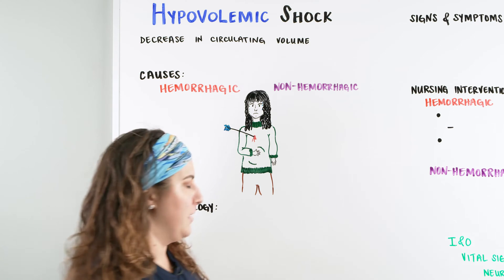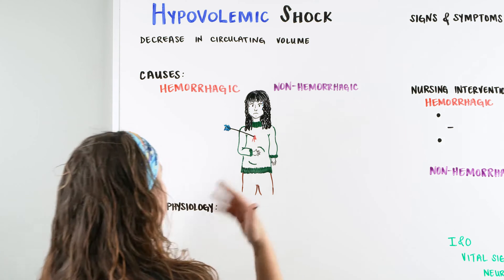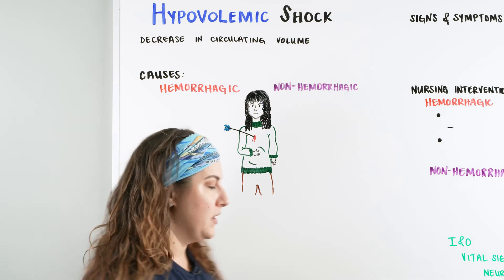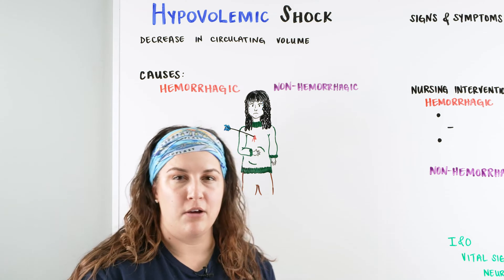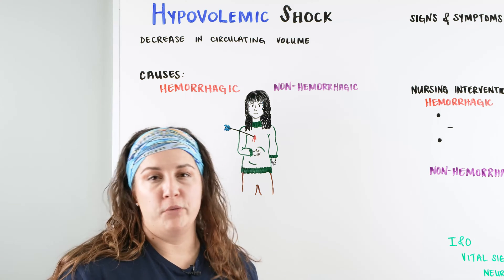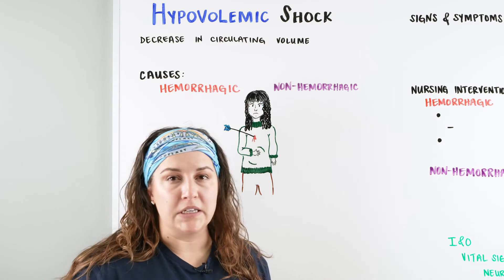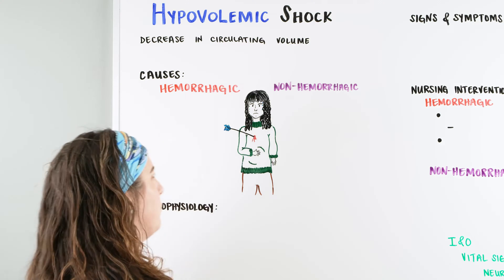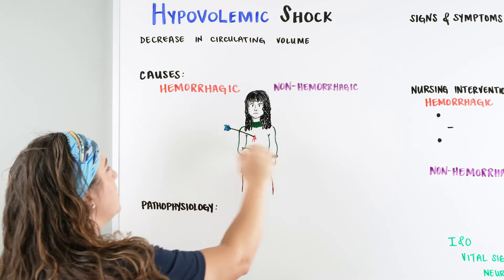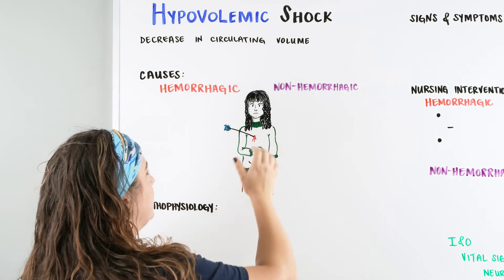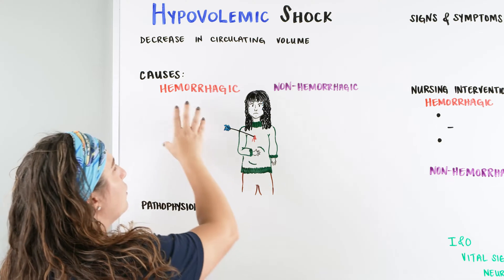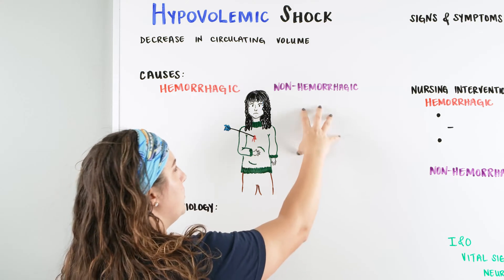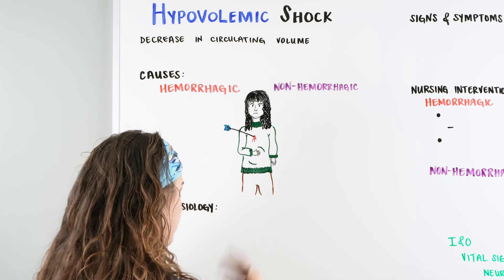So what are we going to be talking about with hypovolemic shock? You should already be thinking this is a decrease in circulating volume, meaning the amount of volume that we have in our body is going to be depleted. It can be broken into two different categories: hemorrhagic or non-hemorrhagic — a loss of blood for one of the causes or a loss of fluid for the other.